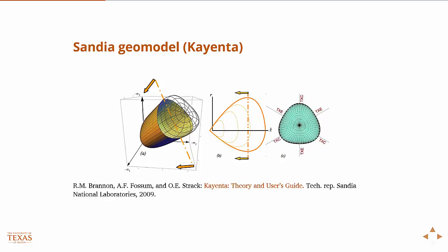So remember, Mohr-Coulomb would look like this, right? So this model, in fact, will reproduce Mohr-Coulomb and Drucker-Prager and other things just by turning on and off parameters.